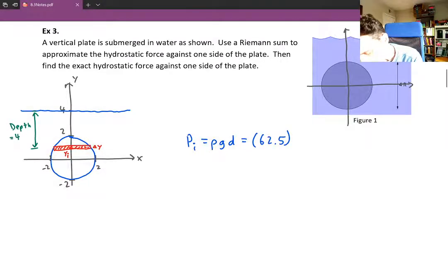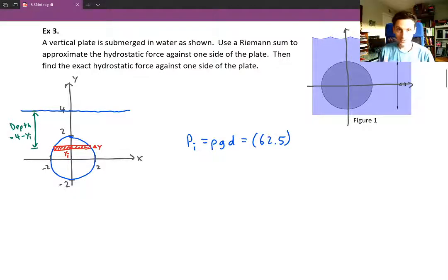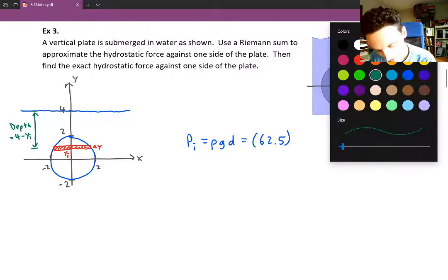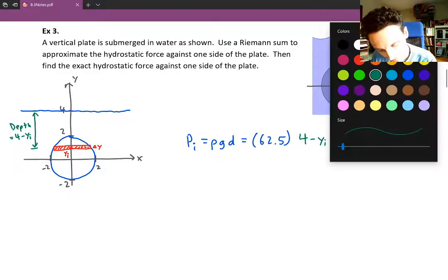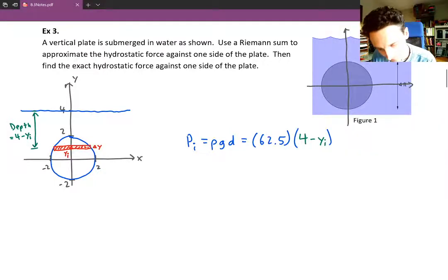So we can subtract the y values there to get the depth. We have a y value of 4 on the top. That's where the top of the water is. Minus the y value of y sub i. That's where the strip is. So we're going to have 4 minus y sub i for our depth.